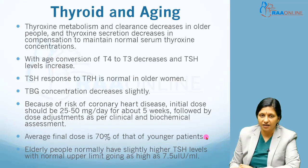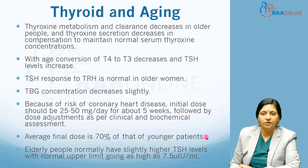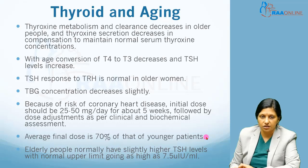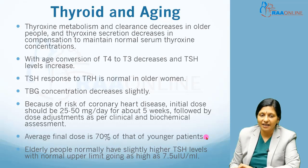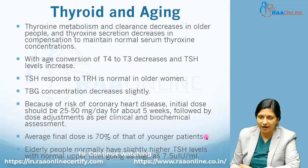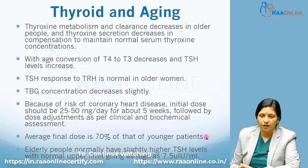Regarding thyroid and aging, thyroxine metabolism and clearance decrease in older people, and thyroxine secretion decreases in compensation to maintain normal serum thyroxine concentrations. With age, conversion of T4 to T3 decreases and TSH levels increase. The TSH response to TRH is normal in older women. However, thyroid binding globulin concentration decreases slightly with age, and because of the risk of coronary heart disease, the initial dose should be 25 to 50 micrograms per day for about five weeks, followed by dose adjustments per clinical and biochemical assessment.